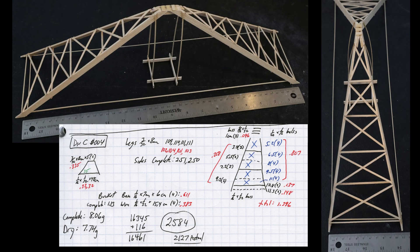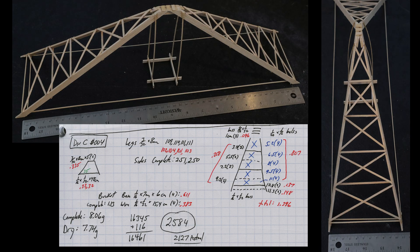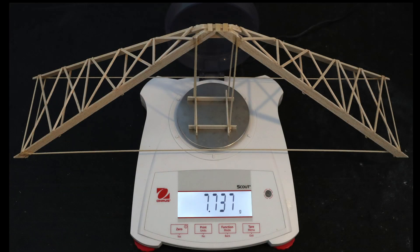Here are my notes for this specific build. Whenever I build a device, I like to keep track of everything that goes into it, so it's not only reproducible, but you can use that data to make further optimizations with later builds. I'll go over more of the specific details of the components in the build videos in the future. Here is the bridge on the scale right before testing, and it weighs 7.74 grams.